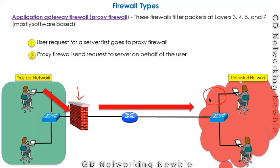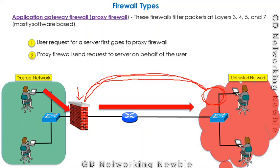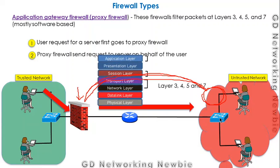From the server's perspective, the communication appears to be between the server and the proxy firewall. The proxy firewall then passes the information back to the client. This is how the proxy firewall acts as a middleman between the client and the actual destination. With respect to the OSI model, it works at Layers 3, 4, 5, and 7 — where Layer 7 is the application layer.